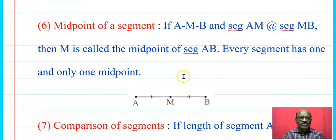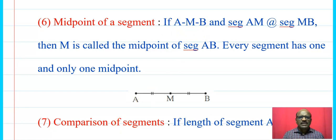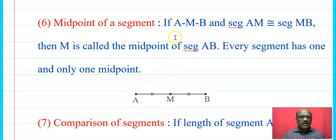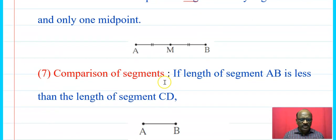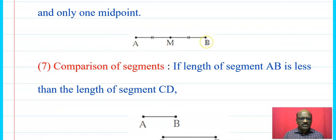Now the midpoint. Every segment has a midpoint. If M is between A and B — that is A-M-B — and segment AM is congruent to segment MB, then M is called the midpoint of segment AB. Every segment has one and only one midpoint. Here M is the midpoint of segment AB.